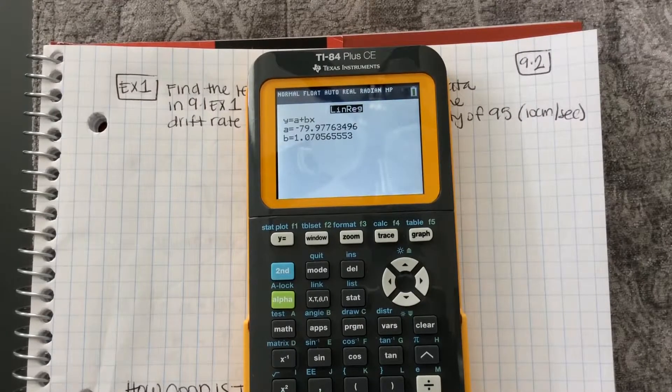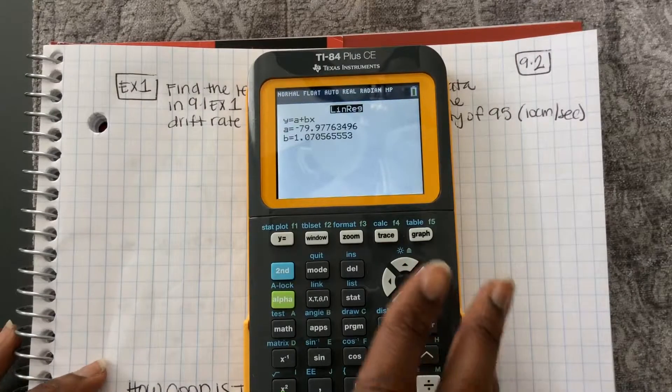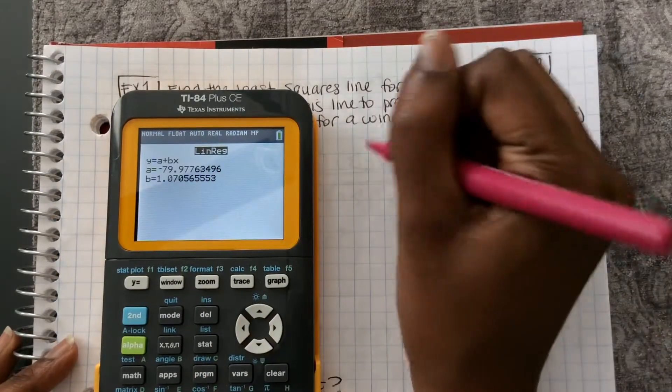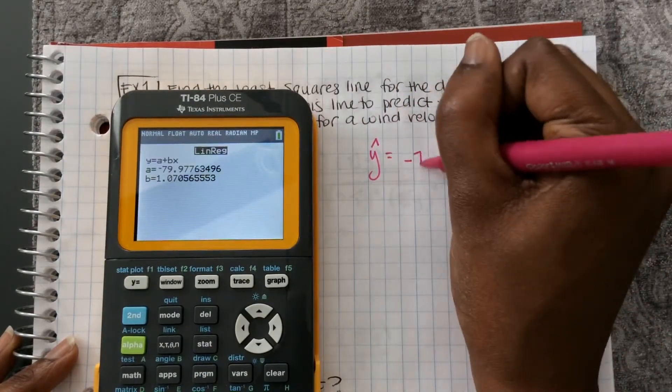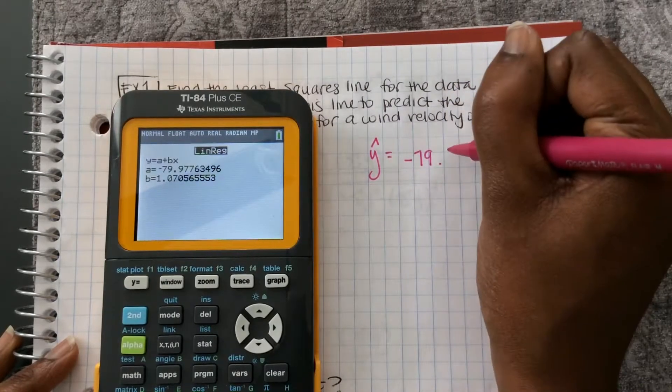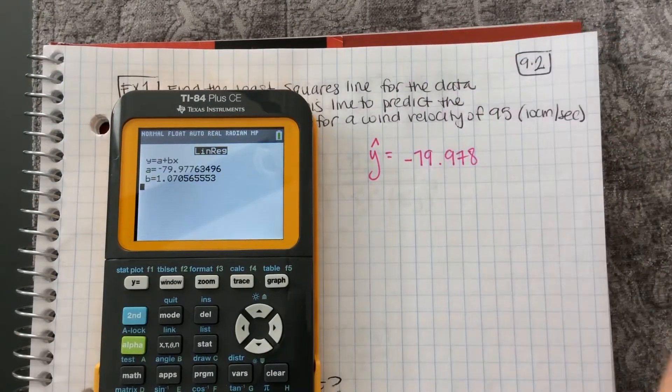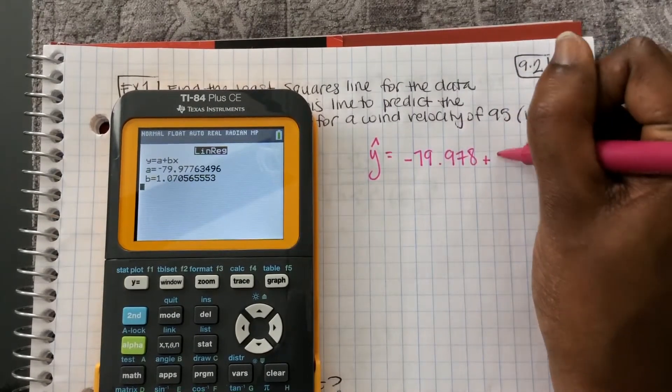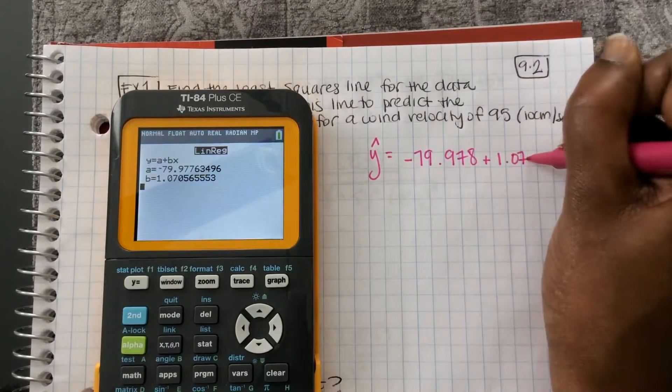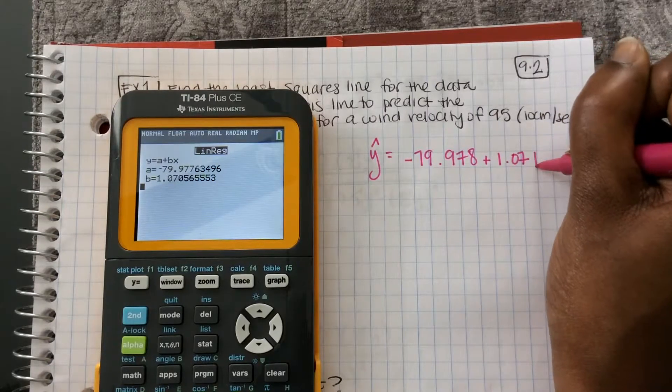So there is the equation of my least squares line. y hat equals negative 79.978. I'm just going to round to three decimal places to be safe. Plus 1.071.